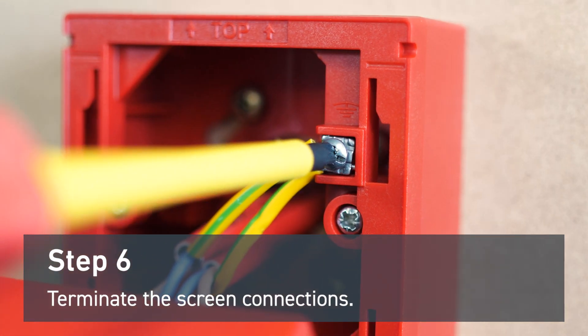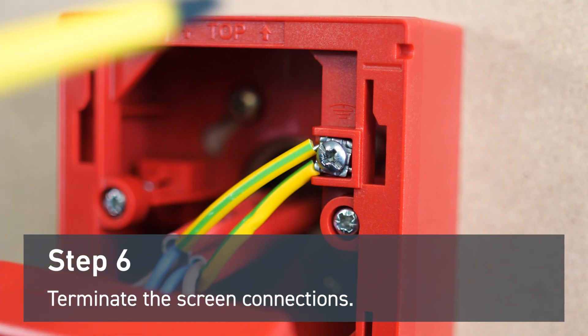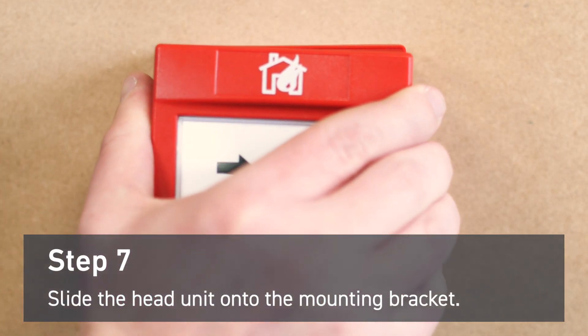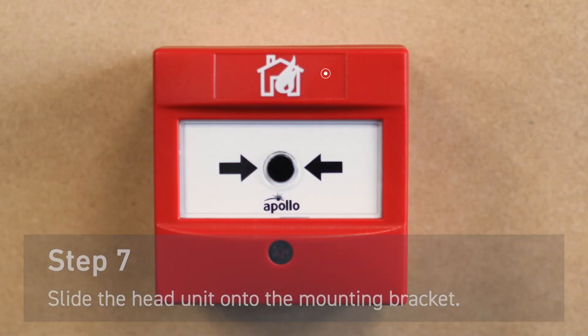Fasten the screen connections to the screen terminal. Attach the head unit to the mounting bracket and now the conventional manual call point is installed.